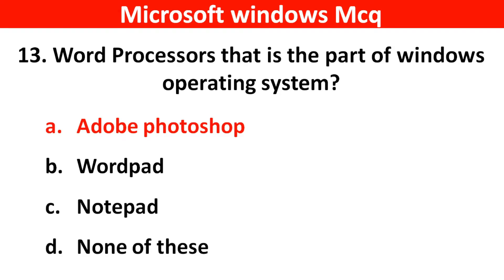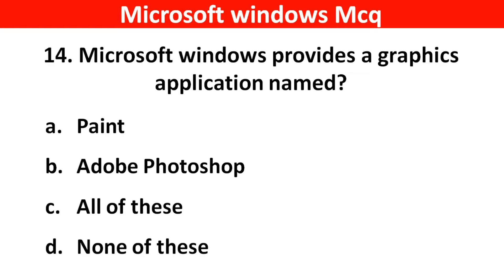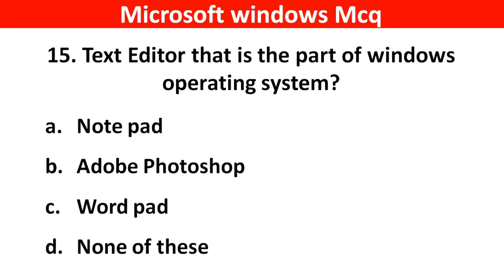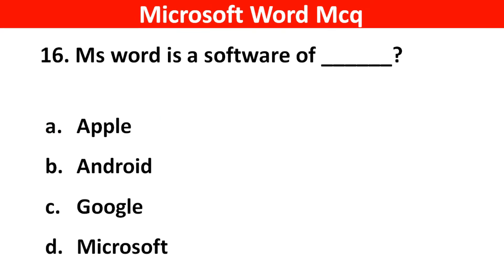Next question: Microsoft Windows provides a graphical application named? Right answer is Option A: Paint. Next question: Text editor that is part of Windows operating system? Right answer is Option A: Notepad. Next question: MS Word is a software of dash dash. Right answer is Option D: Microsoft.